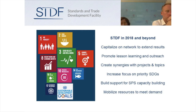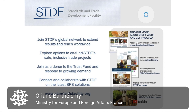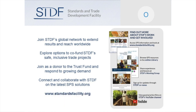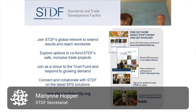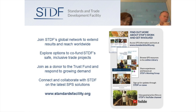The STDF also wants to build more support, commitment, and resources for SPS capacity building. All information on how to apply for STDF funding is available on the website, including an application form for projects, one for project preparation grants, and a guidance note for applicants explaining how to complete the application form and what types of support can be requested.